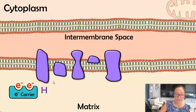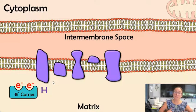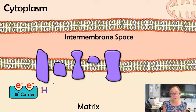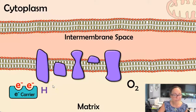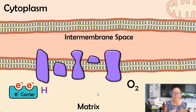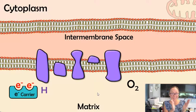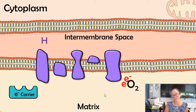When electron carriers arrive at the ETC carrying electrons and hydrogens, they donate their electrons and hydrogen into the electron transport chain — in advanced biology, we say the electron carrier is oxidized. Now, this is aerobic respiration, so this is where we breathe in oxygen. Oxygen is very electronegative and it's going to attract those electrons. Think of it like two magnets pulling toward each other — the oxygen pulls the electrons down the electron transport chain.